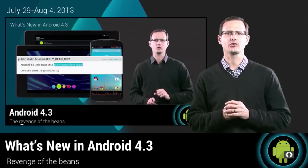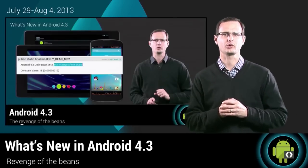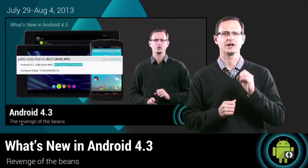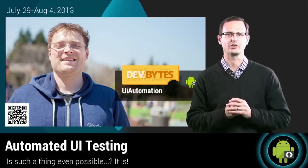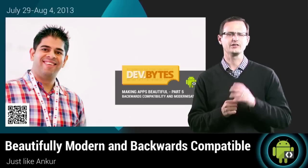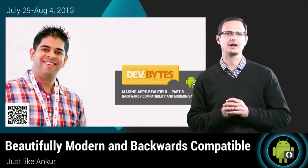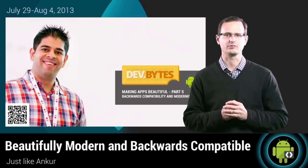Last week, I waved my hands around in a sign of unbridled excitement as I introduced Android 4.3, an exciting gourmet flavor of Jelly Bean, available for your development pleasure. Stefan took a deeper dive into one of these new Android 4.3 features with a look at the new UI automation testing toolkit, while Anker continued his series on making apps beautiful with a glance back at backwards compatibility and a fresh new take on modernization.